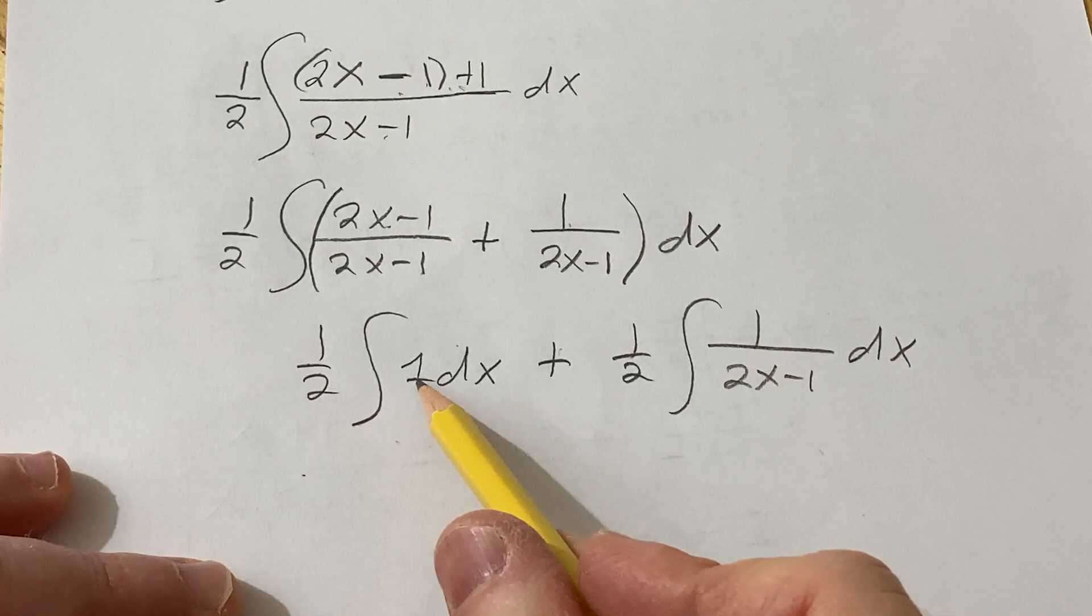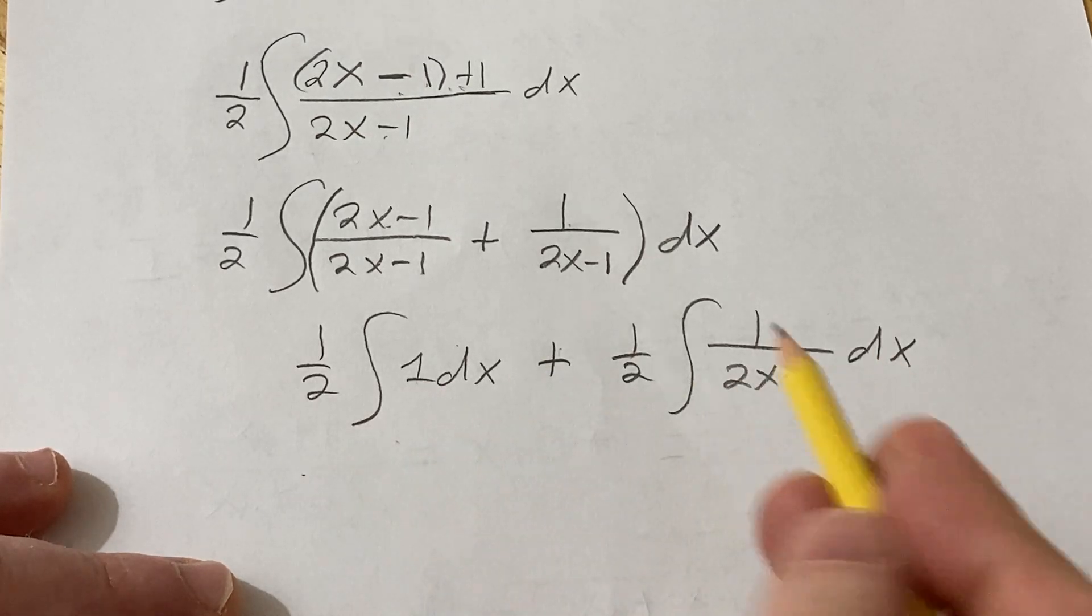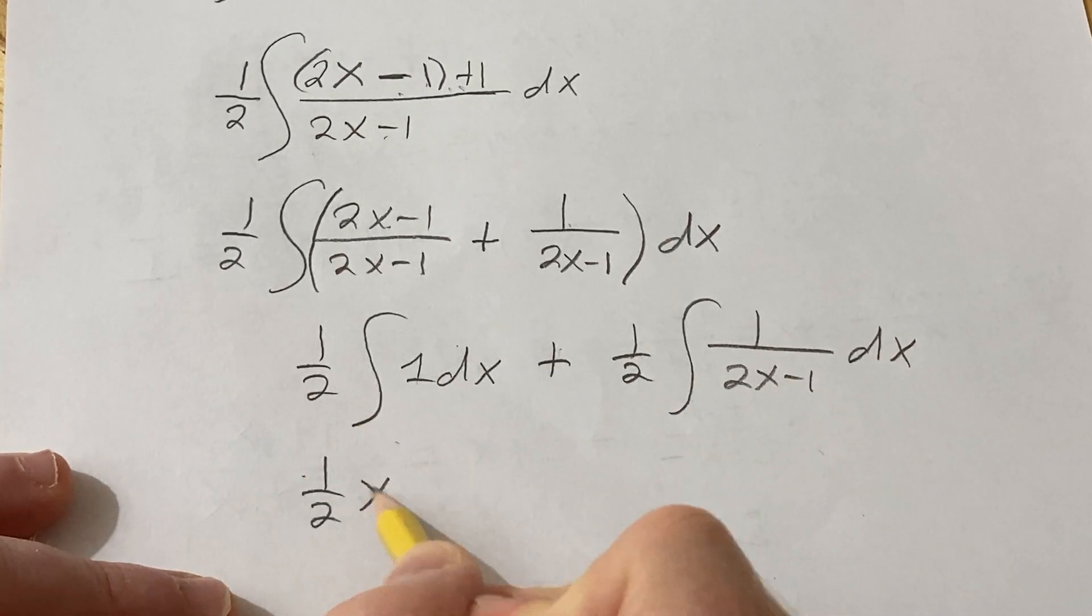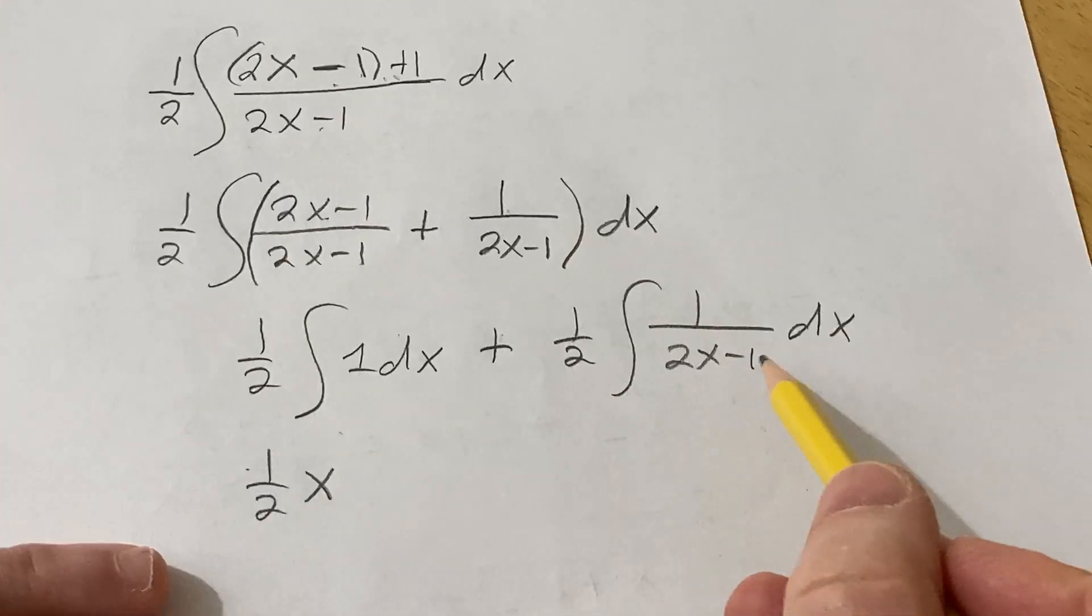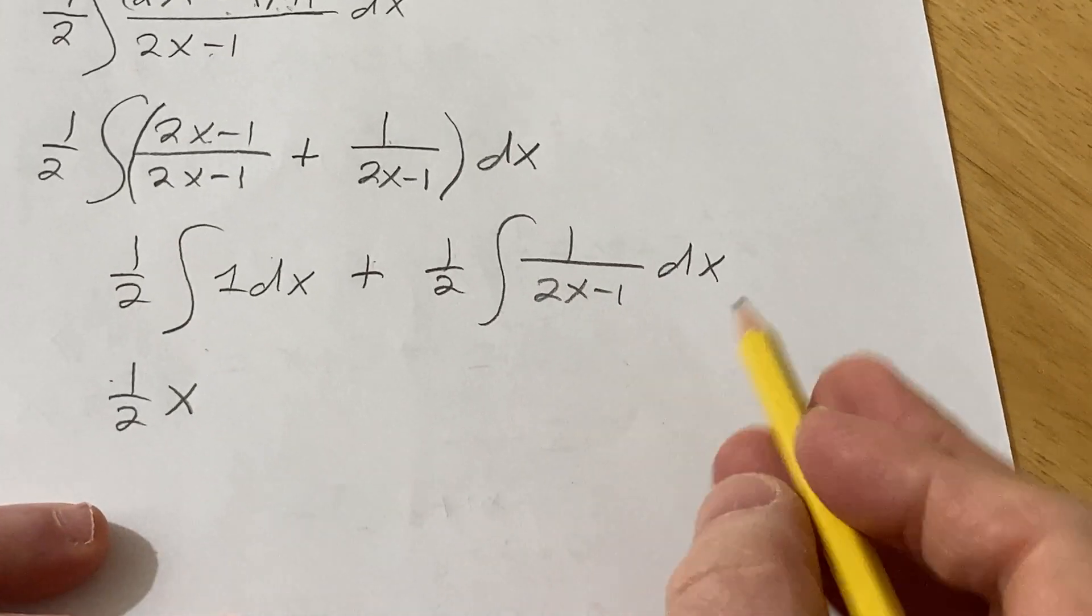This integral is really easy. 1 just integrates dx to x. So this is going to be 1 half x. And this one does require u substitution. So let's do it.